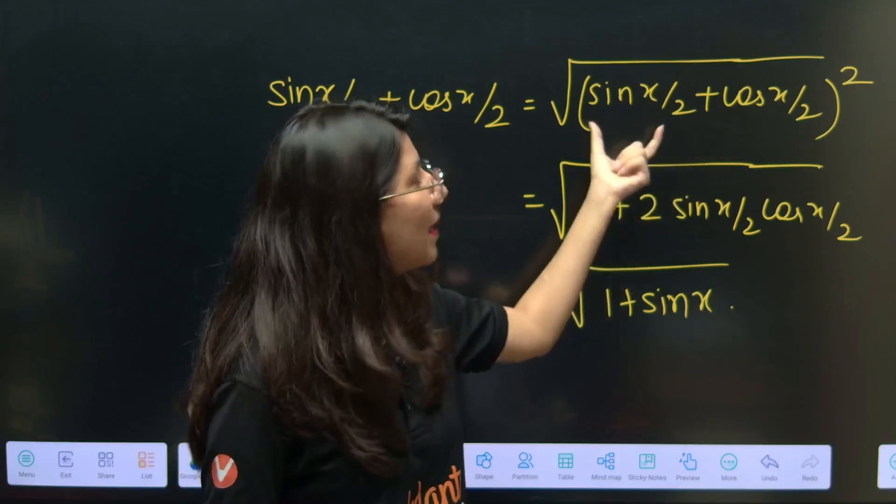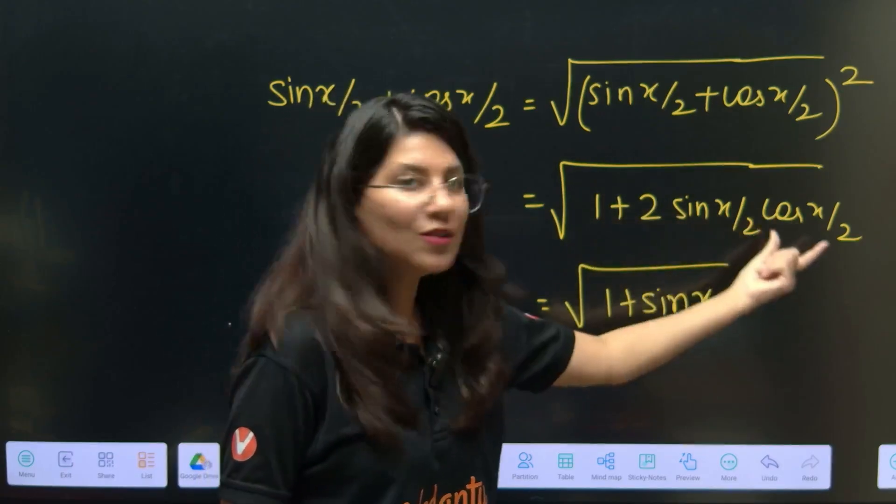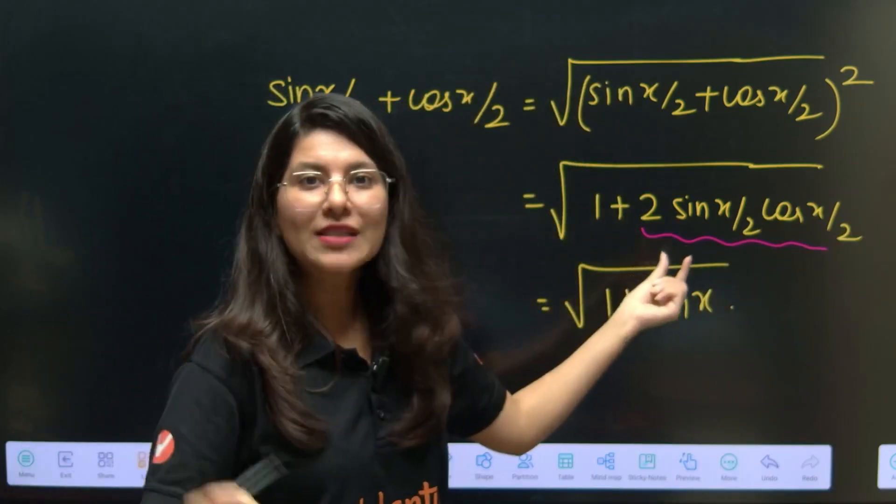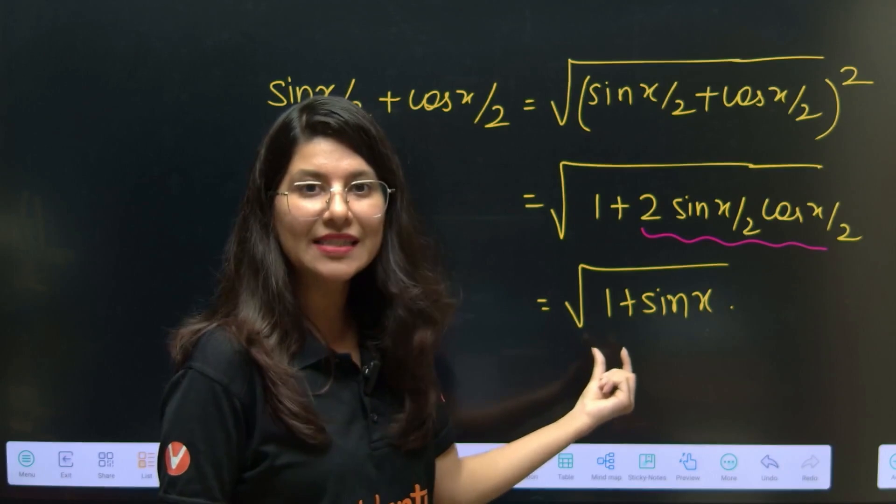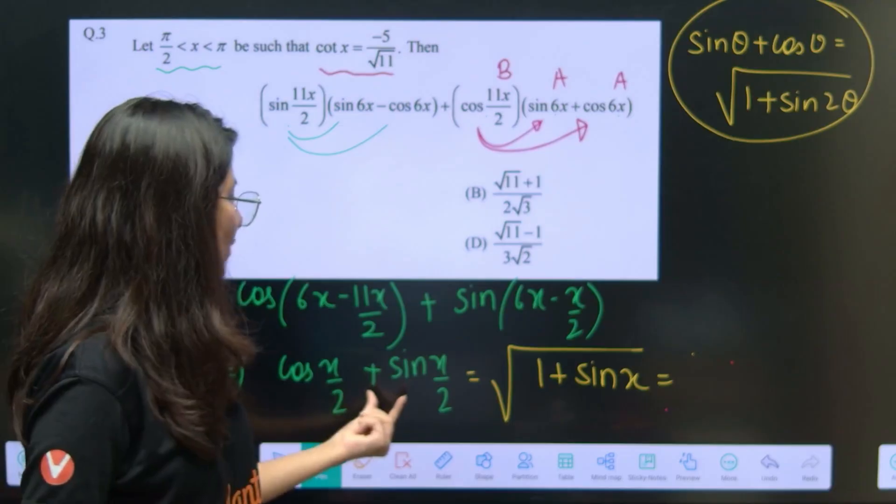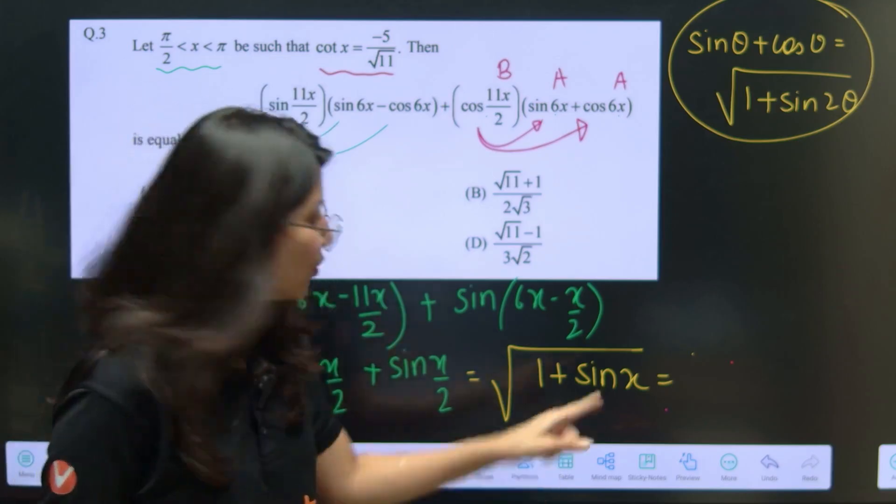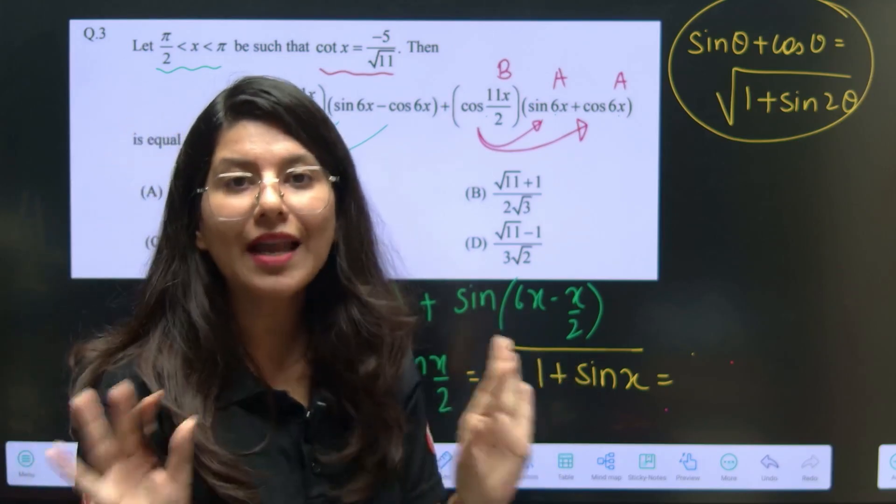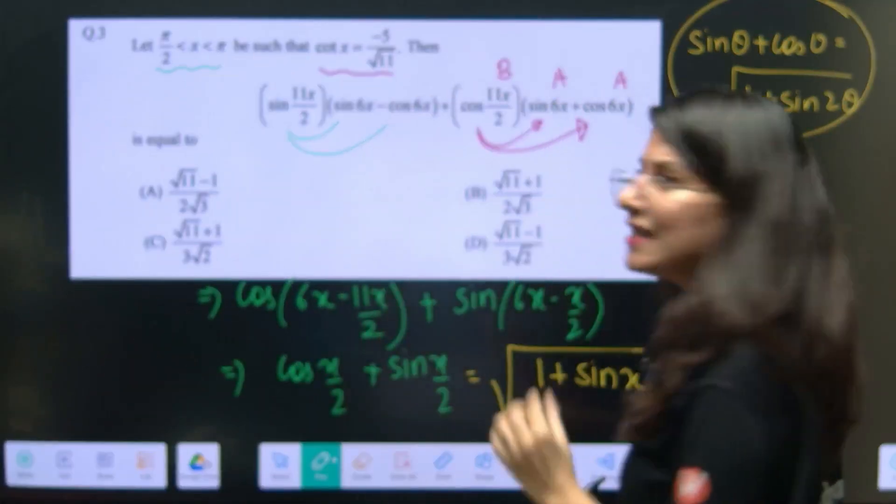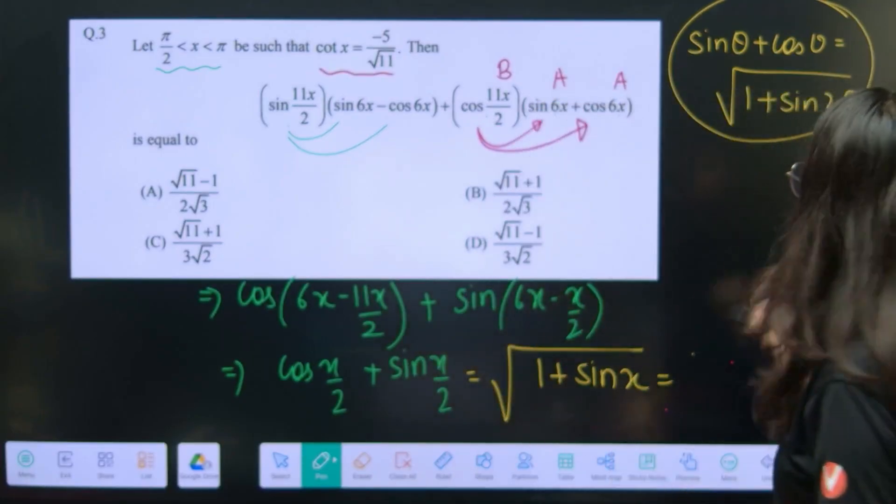Some people will be like what is this formula? Let me tell you, sin x by 2 plus cos x by 2, can I write square root of sin x by 2 plus cos x by 2 whole square? Now open this square, if you open sin square plus cos square is 1, and 2ab is 2 sin x by 2 cos x by 2. This is the direct formula, multiple and submultiple angle, 2 sin a cos a is sin 2a. So this is 1 plus sin x.